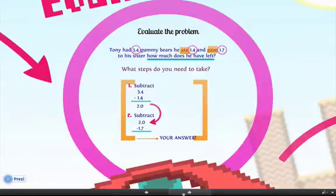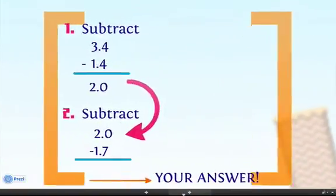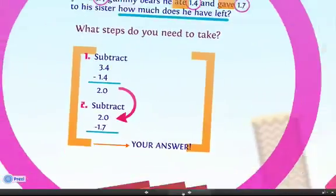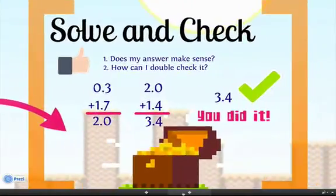And then, we come to evaluate. Evaluate the problem. Tony had 3 and 4 tenths gummy bears, and so we start off with that. Subtract 1 and 4 tenths. You should get 2 gummy bears left. From that, subtract 1 and 7 tenths. What is your answer? The answer is 3 tenths.